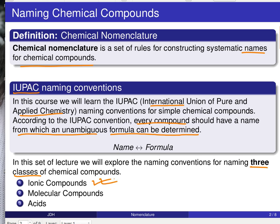So the first type of compounds, the first class of compounds that we're going to be looking at are so-called ionic compounds. The second class are going to be molecular compounds. And finally, we're going to round out with a mini lecture talking about the naming of acids.